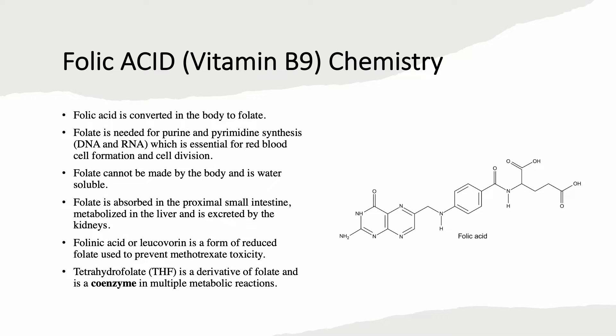Folic acid is found in food and in grains that are fortified with folic acid. The body converts it to folate. You need folate for the synthesis of both DNA and RNA, which is why it's essential for red blood cell formation and cell division. The body cannot make folate. It is water soluble, absorbed in the first part of the small intestine. The liver metabolizes it and the kidneys get rid of any excess.